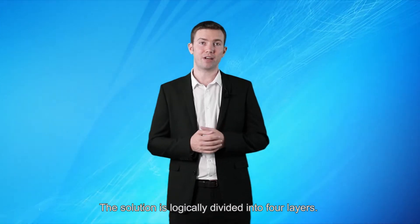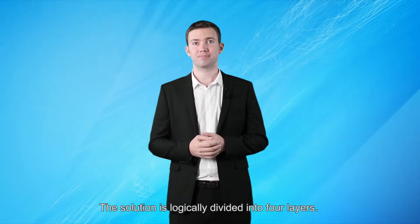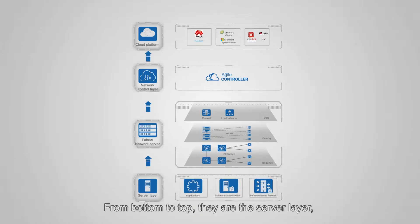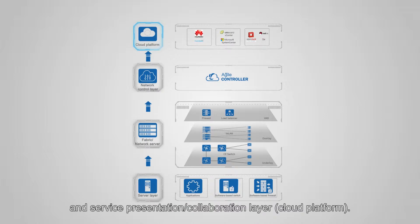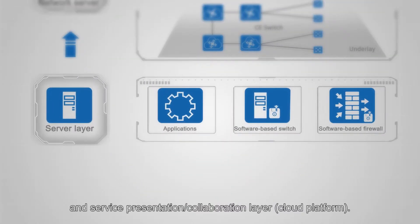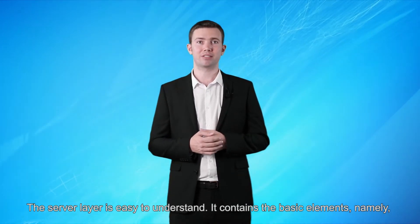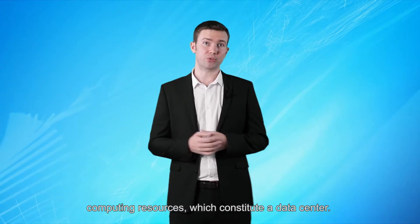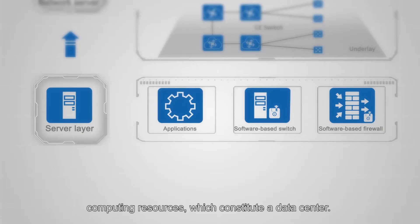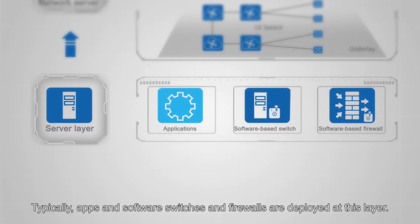The solution is logically divided into four layers. From bottom to top, they are the server layer, network layer, network control layer, and service presentation collaboration layer, or cloud platform. The server layer is easy to understand. It contains the basic elements, namely computing resources, which constitute a data center. Typically, apps and software switches and firewalls are deployed at this layer.